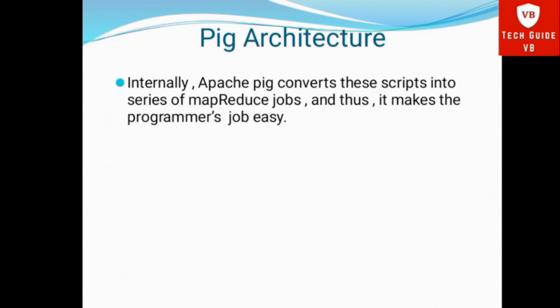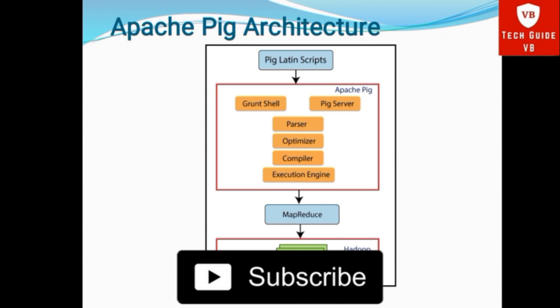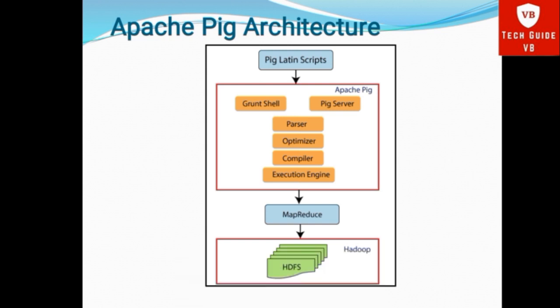Apache Pig Architecture. Internally, Apache Pig converts this script into a series of MapReduce jobs, and thus it makes the programmer's job easy. The Pig Latin script will be developed by the developer. Pig Latin is one of the highest-level languages supported by Pig. Either from Grunt Shell or Pig Server, the Pig script task is assigned to the Parser. The Parser converts the Pig Script into a Direct Acyclic Graph, DAG.